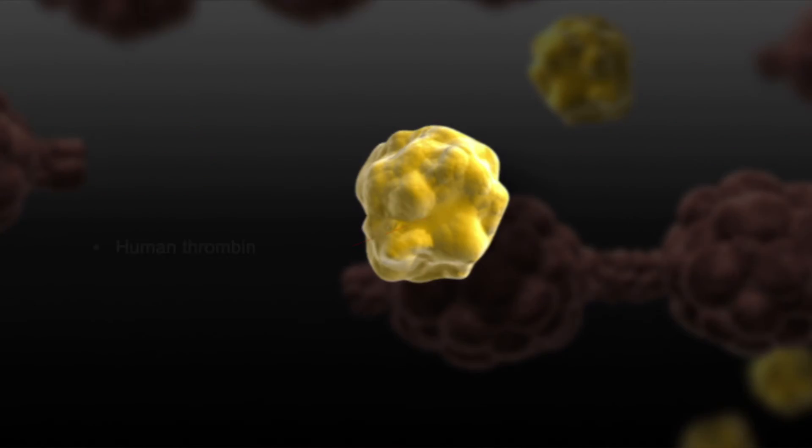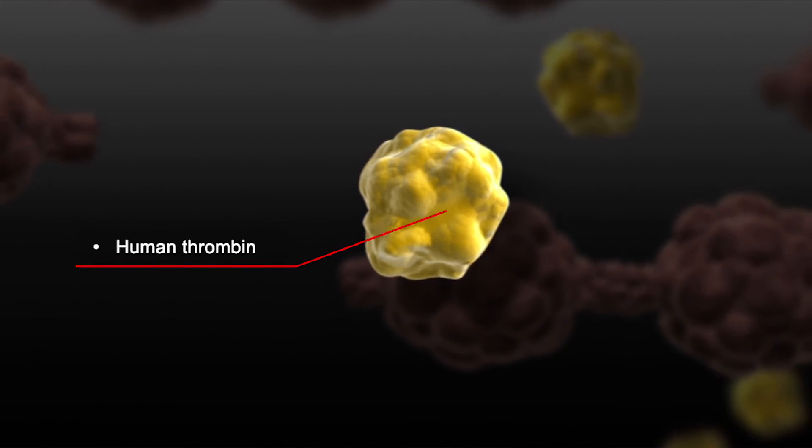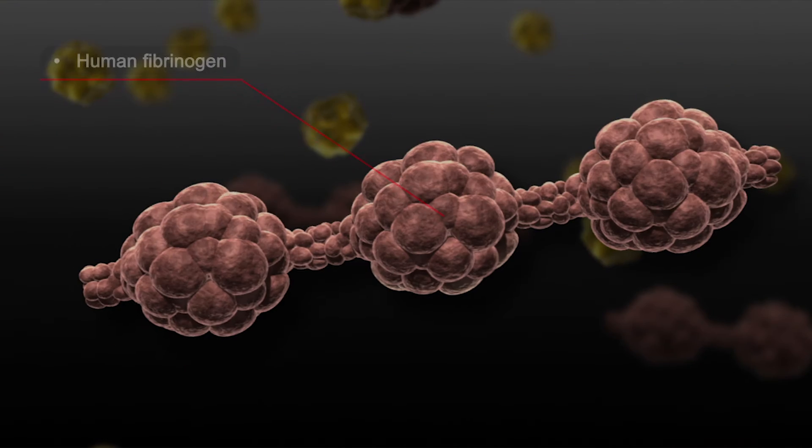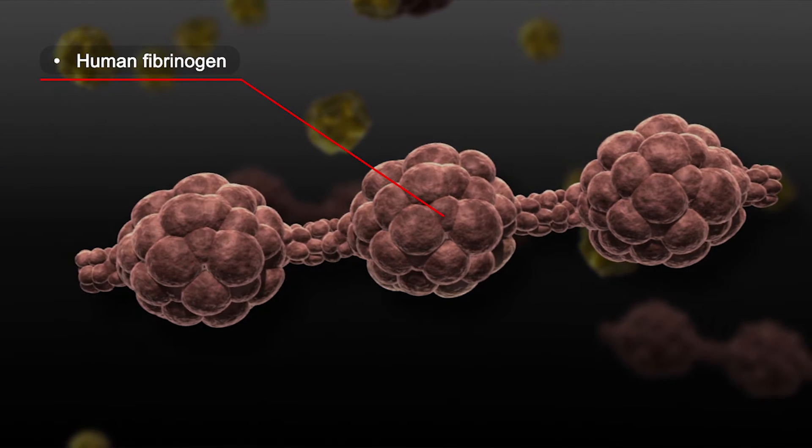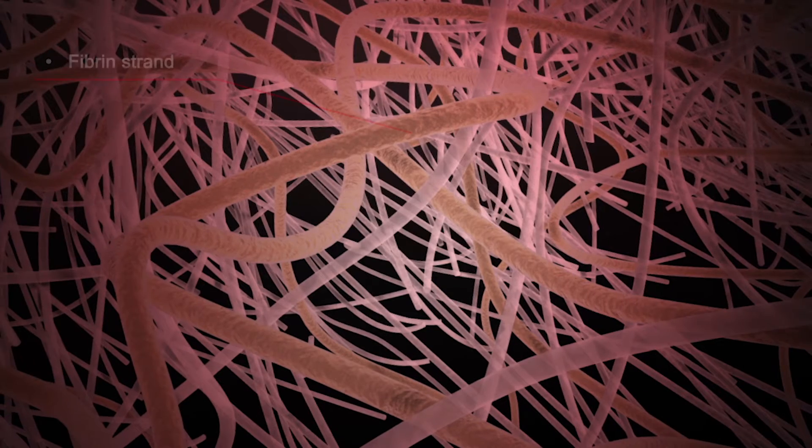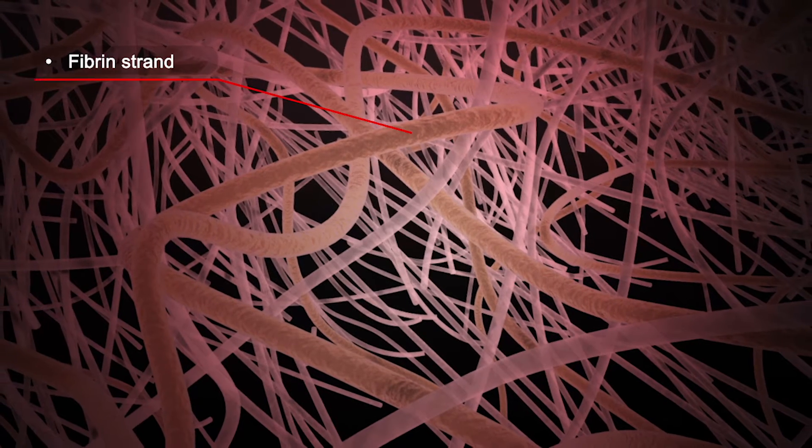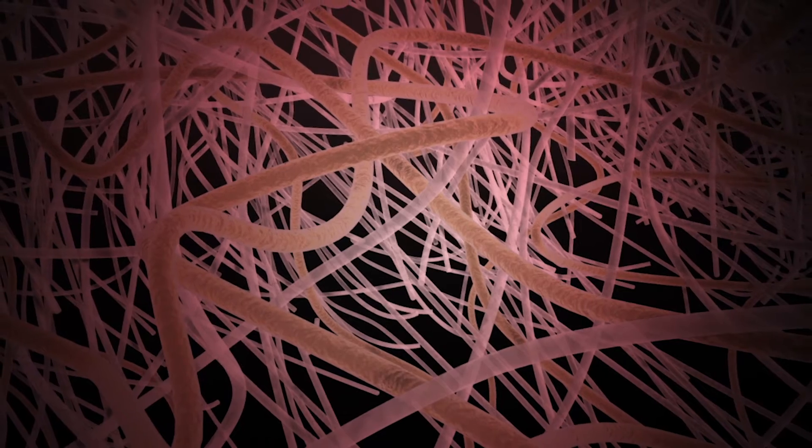The biologics are thrombin, an enzyme in blood that facilitates clotting, and fibrinogen, a protein that interacts with thrombin to form fibrin, the major component of a blood clot. These biologics are uniformly embedded in the patch.